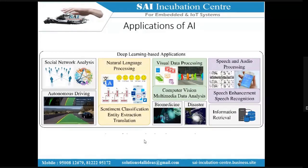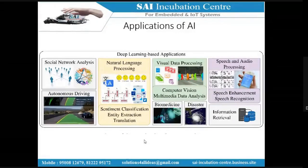In past years, marketing was broadcasted — offers were given to everybody. Nowadays, every marketing has become targeted marketing. Based on what you like as an individual, you get specific advertisements. There is a clear difference between broadcasted marketing and targeted marketing. Targeted marketing is becoming popular, enabled by machine learning analysis.